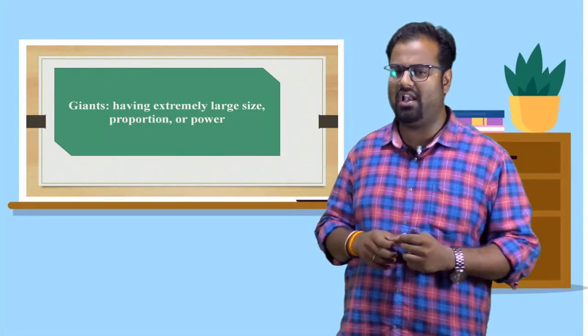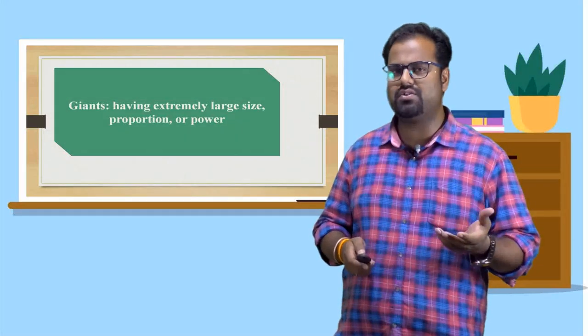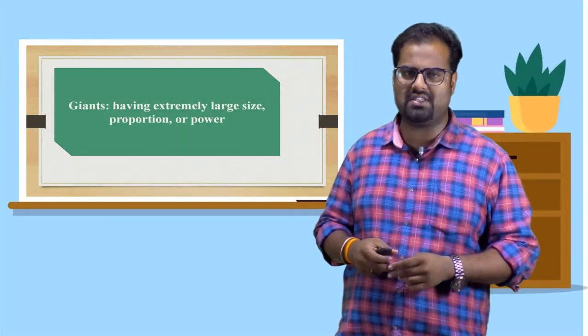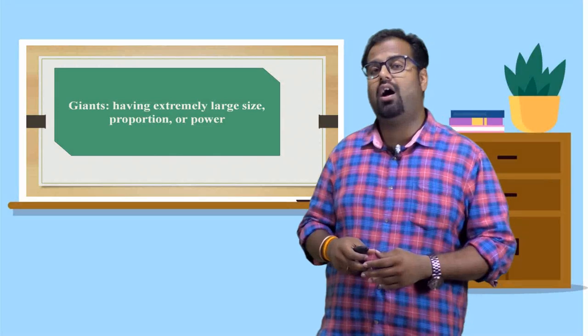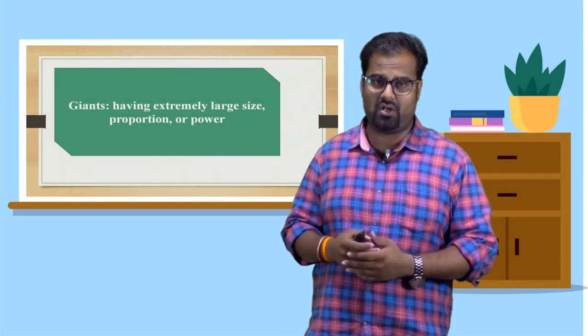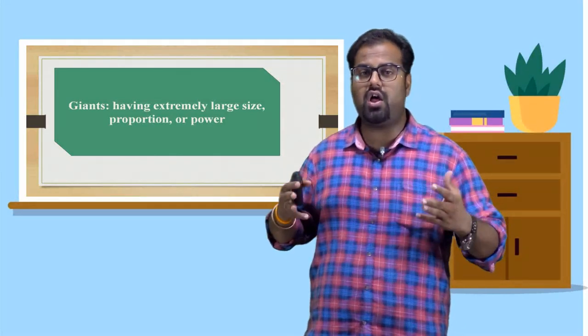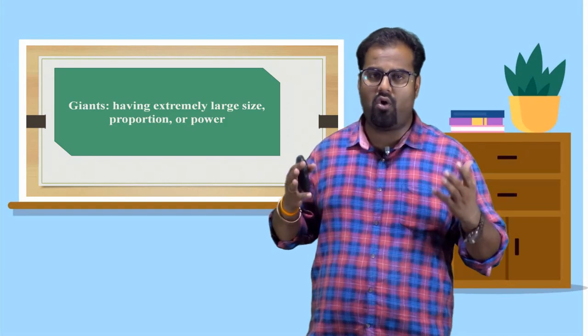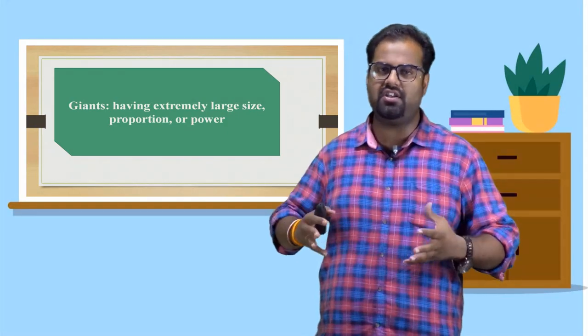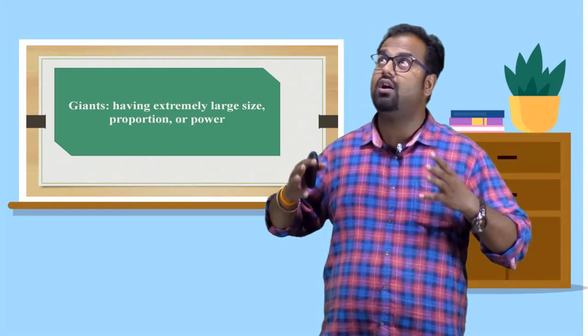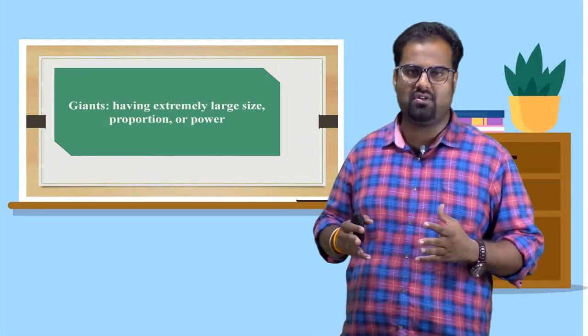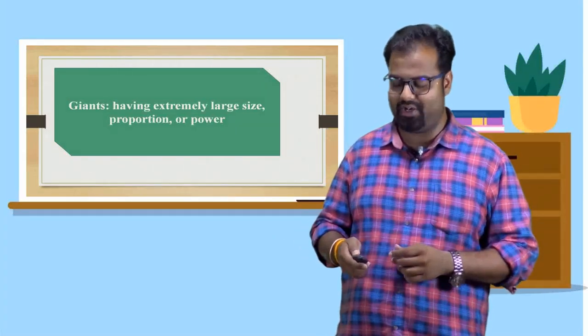Having extremely large size. How can we use this word in your own sentence? For example, I have visited with my friends to Hampi. There are giant type of rocks. Gigantic rocks. Very large size kind of rocks. Structures. I think you got it.